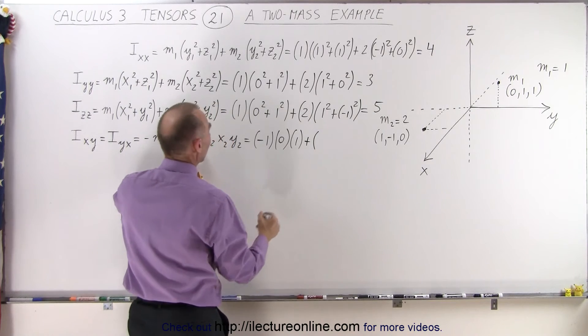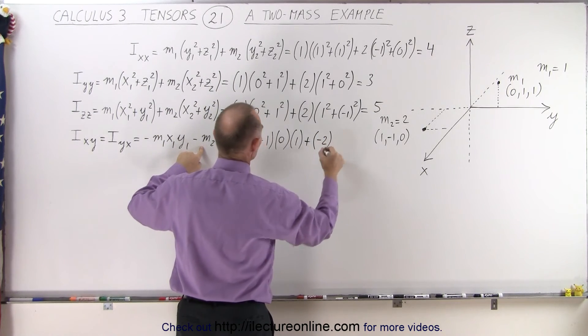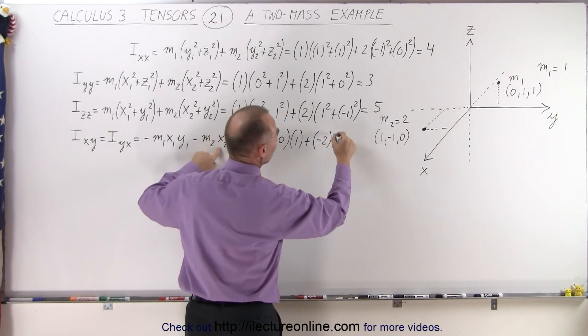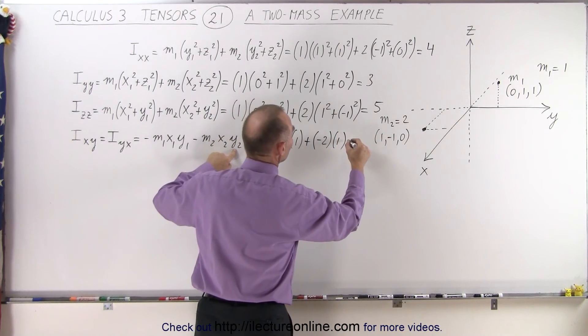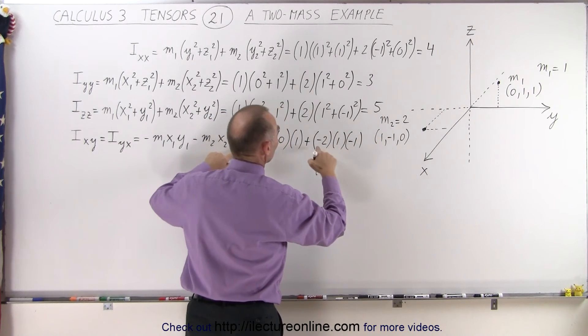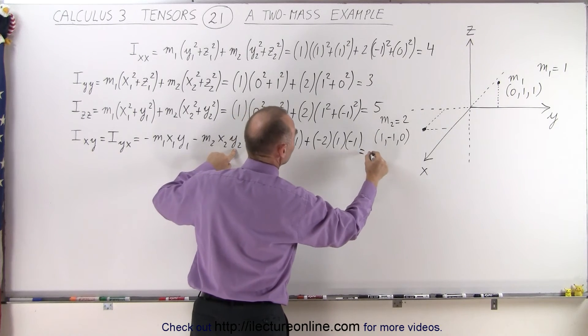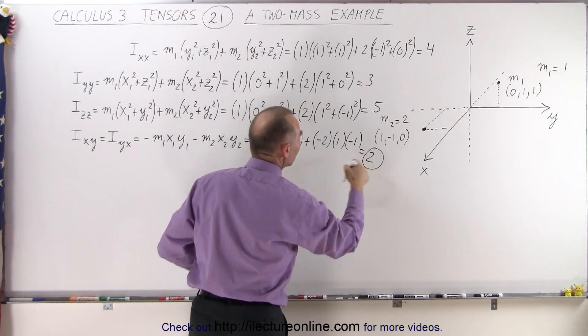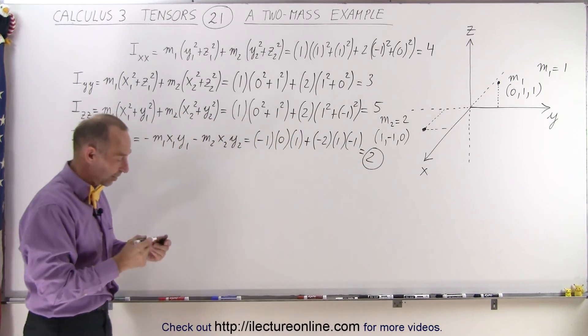Plus we have a negative m2, that's minus 2 times x2 which is 1, times y2 which is a minus 1. And minus 2 times a minus 1 is equal to a positive 2. So there we do have one off-diagonal element.